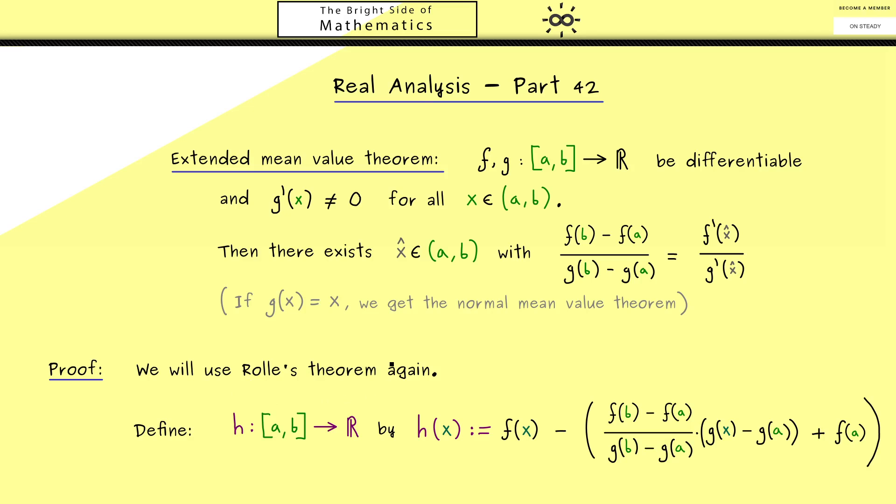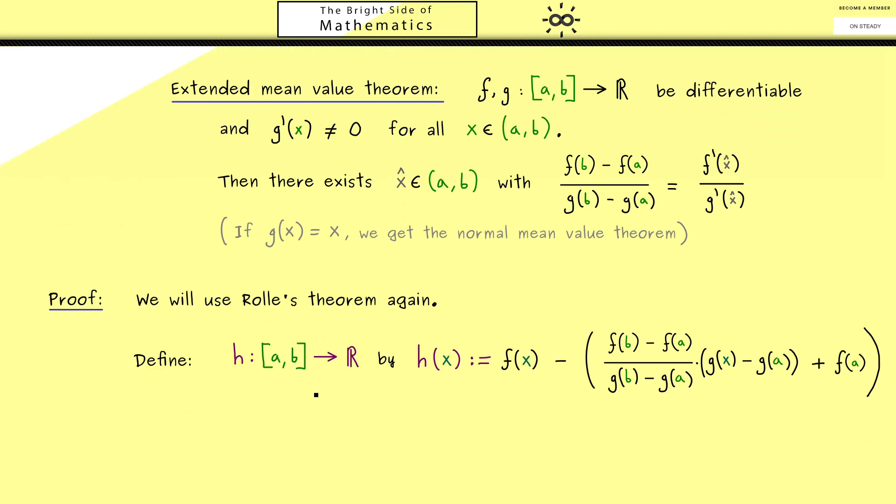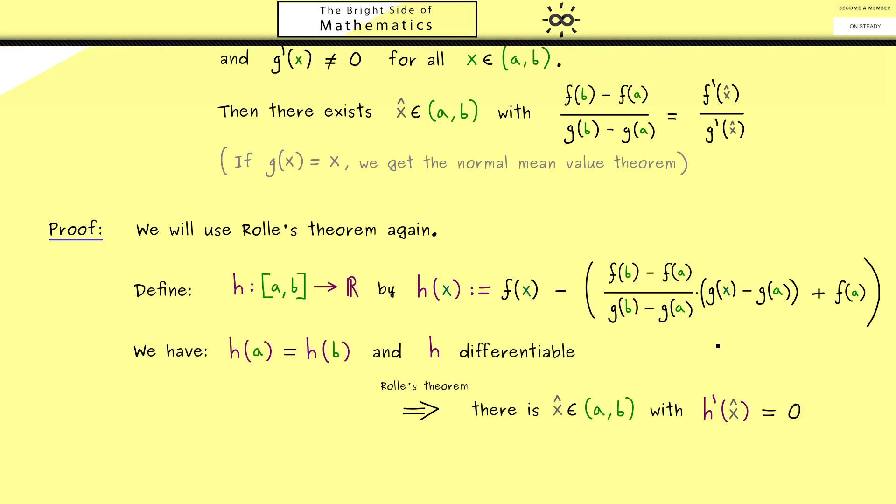And to this function we can apply Rolle's theorem. And what you should check is that we have all the assumptions. Differentiability is not a problem at all and we have the zeros at the boundary. Now please recall these are exactly the assumptions of Rolle's theorem. And it tells us there is a point x̂ in the open interval such that h'(x̂) is exactly 0.